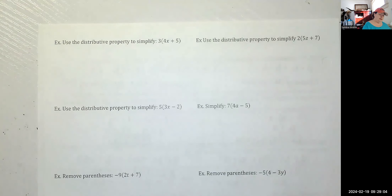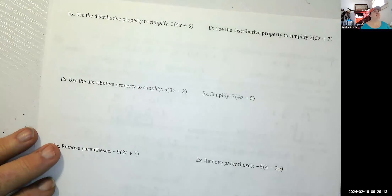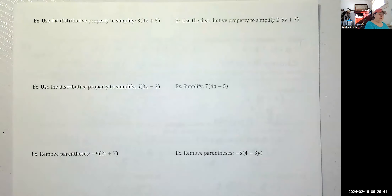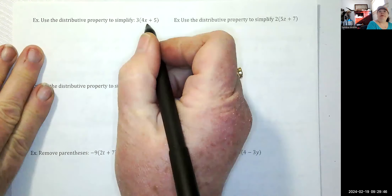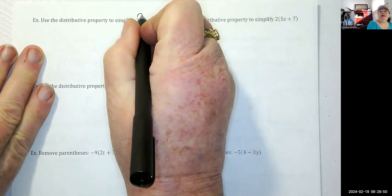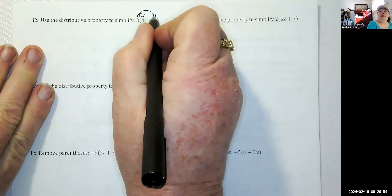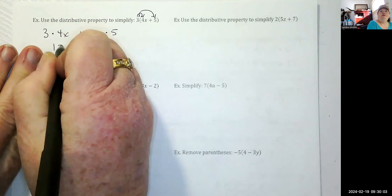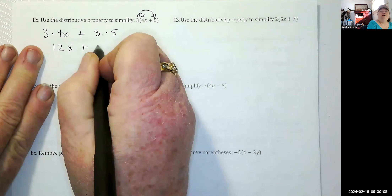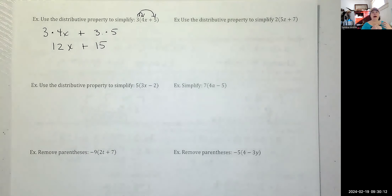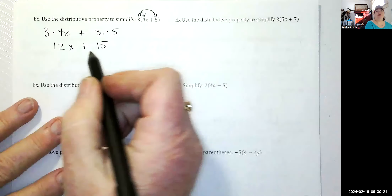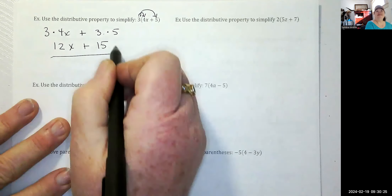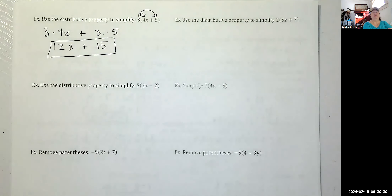Now let's use the distributive property with variables. Three times the quantity 4x plus 5: we draw our arrows and go three times 4x plus three times 5. Three times four is 12, bring down the x, plus three times five is 15. We get 12x plus 15. You cannot add apples and oranges — a term with a variable and a term without — so 12x plus 15 is our final answer.